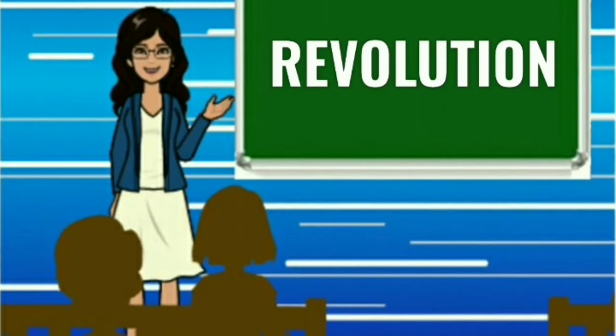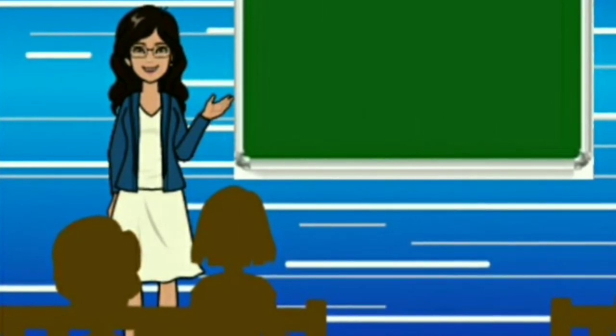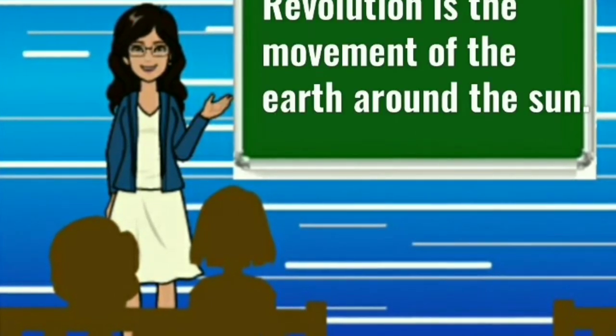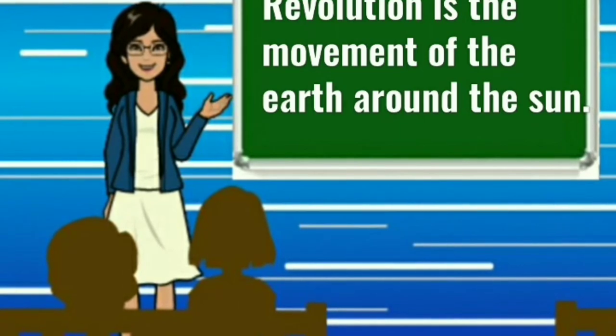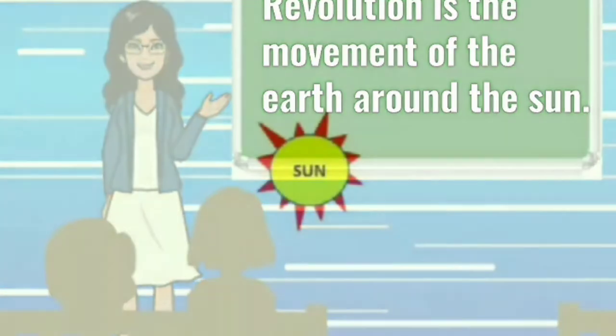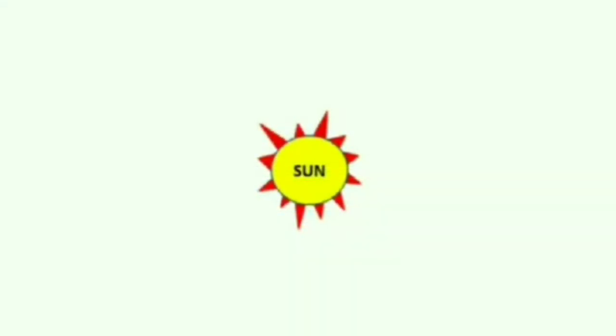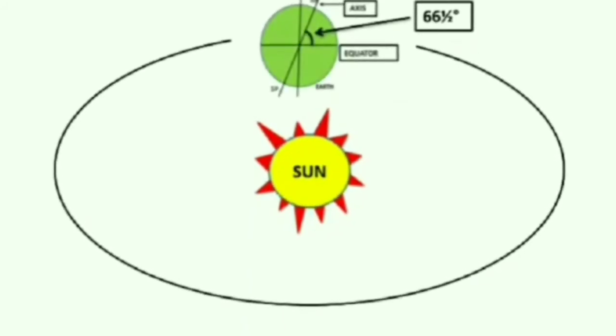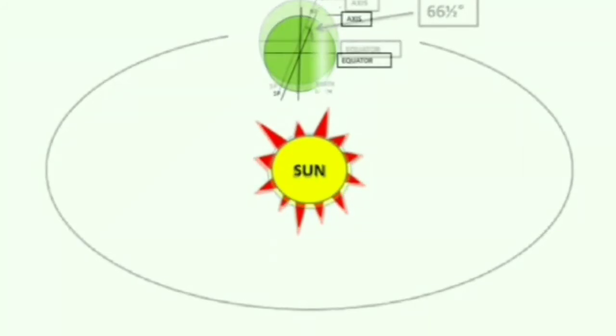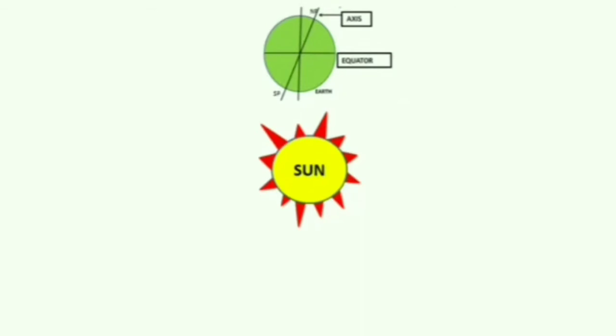I am going to tell you about revolution. Revolution is the movement of the earth around the sun. Here you can see sun is at the center and the earth is moving around the sun in a fixed path. And this path is known as orbit.